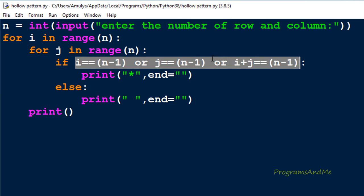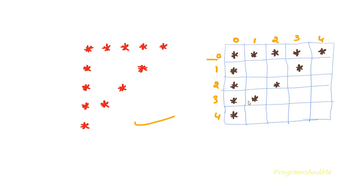Now in this program I need to change the condition because we wrote the base program for a different pattern. To get today's pattern we need to update the condition. Let's divide this pattern into three parts: the first part, the second part, and the third part — stars may overlap in some places and that's okay.